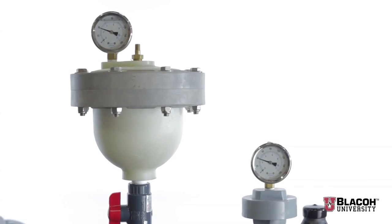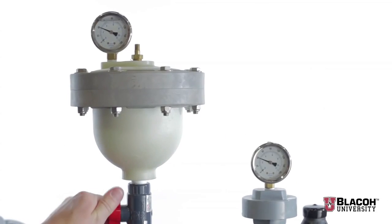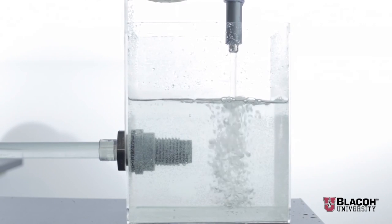And again, as we deactivate the dampener, you will see the pulsation and the wide variation in pressure. Activating the dampener again immediately smooths the flow and eliminates the wild pressure swings.